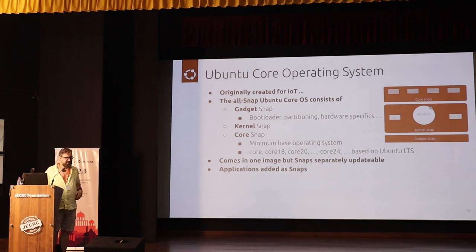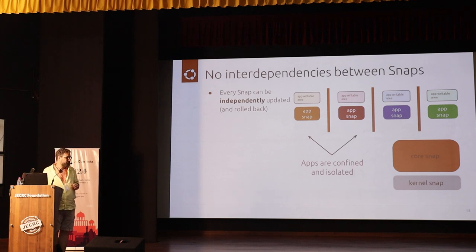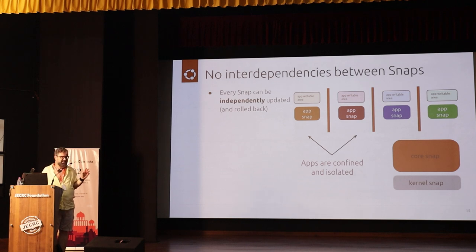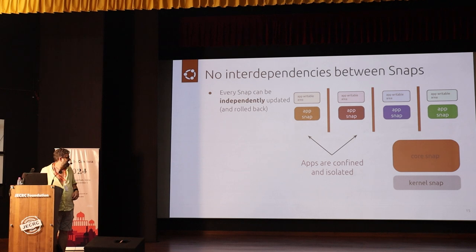Ubuntu Core is the all-snap operating system. Updates are atomic, as usual for snap, for both the operating system and for the snaps. There is also encapsulation — the application snaps and the system snaps are all encapsulated and communicate only through well-defined interfaces. SnapD manages all this.